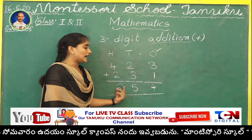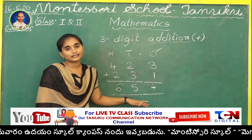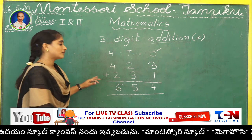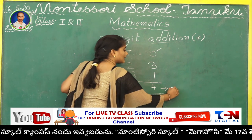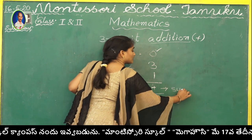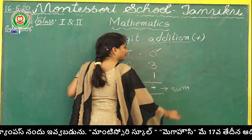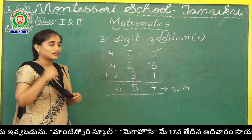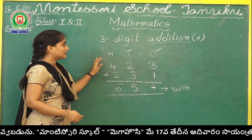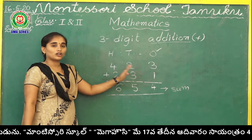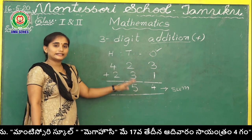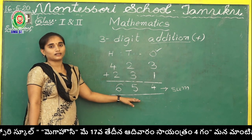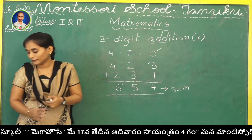654. The answer in this addition is called — we learned yesterday — sum. This is a model of 3-digit addition. Practice this type of addition, children.